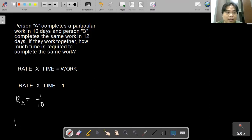The same with person B. If he completes one particular work in 12 days, then his daily rate would be 1 over 12, or just the reciprocal of the amount of time to complete the work.